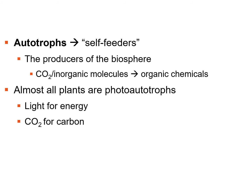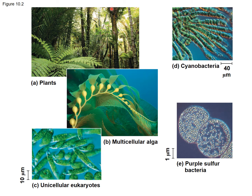A number of organisms beyond plants can undergo photosynthesis. These include cyanobacteria — thought to be the origin of the chloroplast — as well as algae, which can be multicellular or unicellular. Purple sulfur bacteria are another example, along with other unicellular eukaryotes in the protist category.